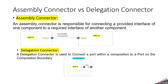What is the difference between an assembly connector and a delegation connector? An assembly connector is responsible for making communication between two software components. For example, software component A has a P-port and software component B has an R-port — both are inside the composition — and the assembly connector connects them. A delegation connector connects the ports of a composition software component with the ports of its inner software components.